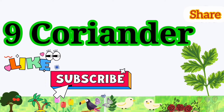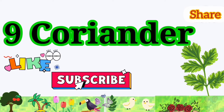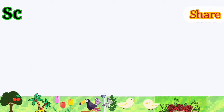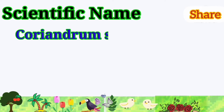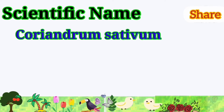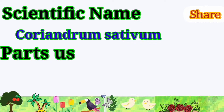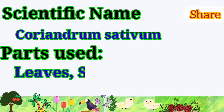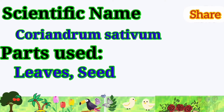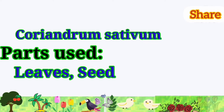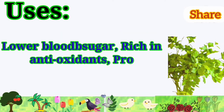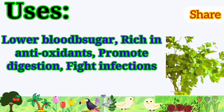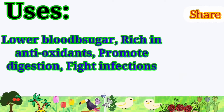Coriander: its scientific name is Coriandrum sativum. Parts used are leaves and seeds. It is used to lower blood sugar, acts as an antioxidant, promotes digestion, and fights infections.